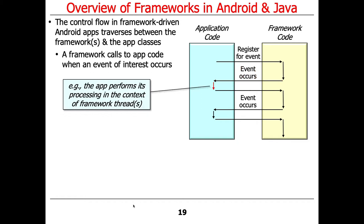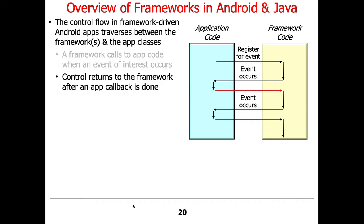When something occurs, like a user clicking a button or a GUI widget event, the framework detects it and calls back to the app code, dispatching the appropriate hook method — such as onCreate, onStart, or similar. This is called a hook method because it provides a hook that can be customized by whoever's writing the app, and that's where application-specific or domain-specific code resides.